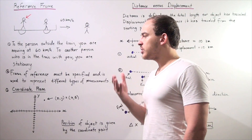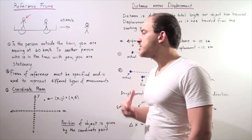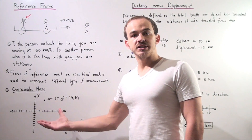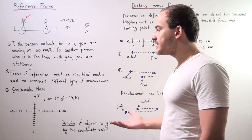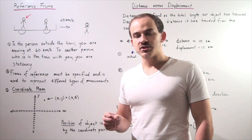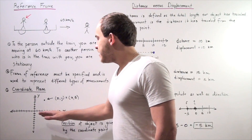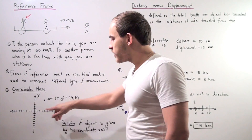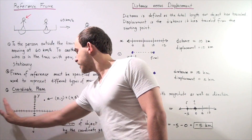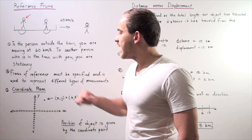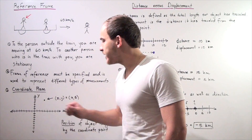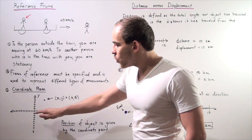In physics, we usually use the coordinate plane to specify our reference frame. So our reference frame is our coordinate plane. Let's suppose we want to specify the location or position of our object on the two-dimensional plane — the XY plane. So this is our point of origin. Anything going along the X axis in the positive direction is positive, negative in the other direction. Anything going up on the Y axis is positive.